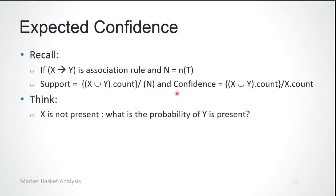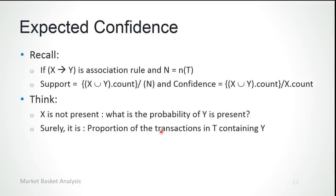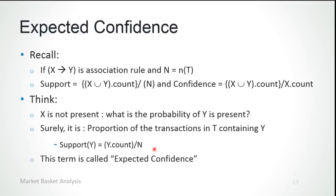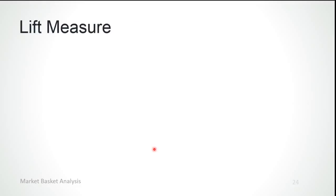Now, if X is not present, what is the probability that Y would be present? Confidence gives the probability that Y is present given X is present. If X is not present, the probability that Y is present is simply the proportion of transactions in T that contain Y — that is, the support of Y, which equals Y count divided by N. This term is called expected confidence.